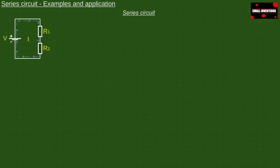The series circuit consists of a power supply and a minimum of two consumers, in our case two resistors. The first thing we can notice is that the same current flows through both resistors.